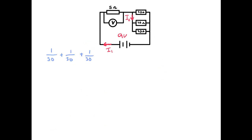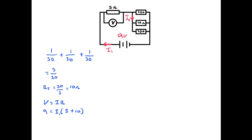Okay, here's my solution. We've got those three 30-ohm resistors all in parallel, so the total resistance is 30 divided by 3, which is 10 ohms. Then we apply V equals IR. We've got 9 volts going into our circuit, and the total resistance is those three 30-ohm resistors in parallel — 10 ohms — plus the 5 ohms, giving a total of 15 ohms. So 9 divided by 15 gives us I1, which is 0.6 amps.